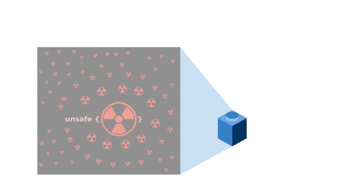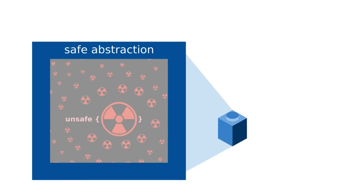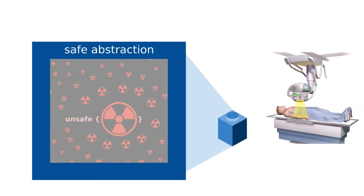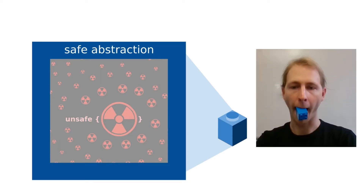When working with radioactive materials, one of the key questions is: how do you make sure that they do not leak? In Rust, this is ensured by encapsulating unsafe Rust in a safe abstraction. The main challenge is ensuring safety not only when the component is used as intended, but also when it is completely misused. In the rest of this presentation, we will focus on the question: how do programmers use unsafe Rust?